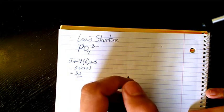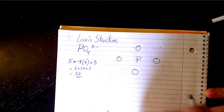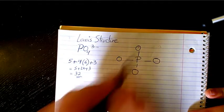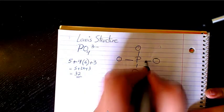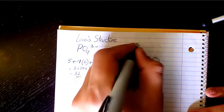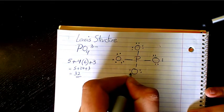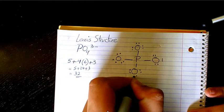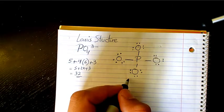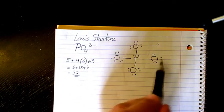I place phosphorus in the middle with oxygens around it, then put single bonds around each oxygen. Next, I place the remaining electrons as lone pairs around each oxygen, giving each oxygen 6 non-bonding electrons.